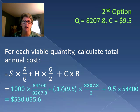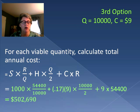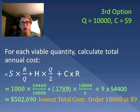The second option uses ten thousand units at $9 per unit. We have to use ten thousand units because that's the minimum amount to get the $9 price. The total cost is $502,690, which is actually lower than the cost using the EOQ with the $9.50 price.